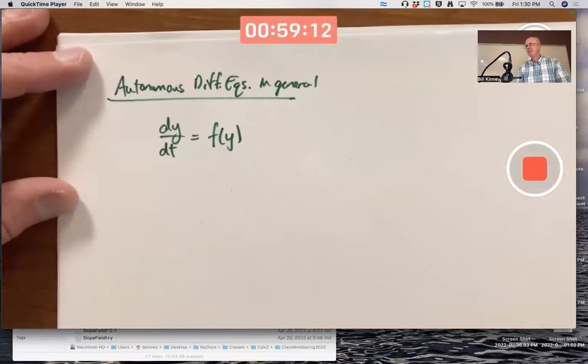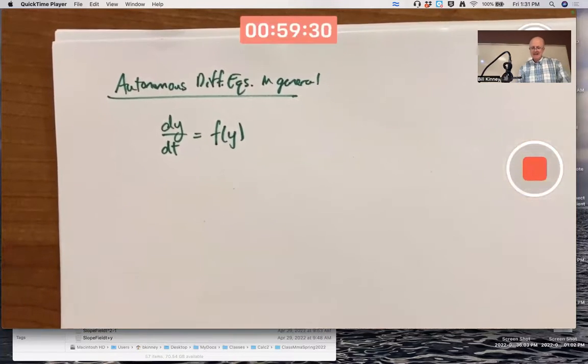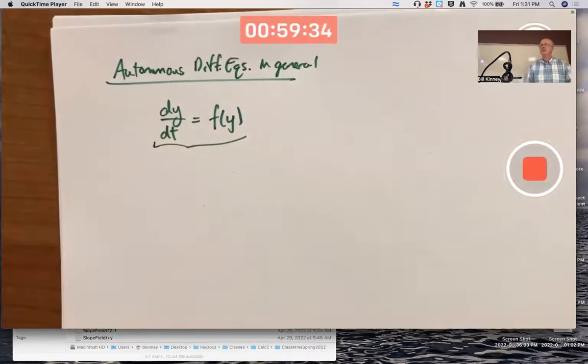There could be other constants like m or g or k, but no t's. This is an autonomous differential equation. The right-hand side only depends on y. To think about approaching such a situation in general...